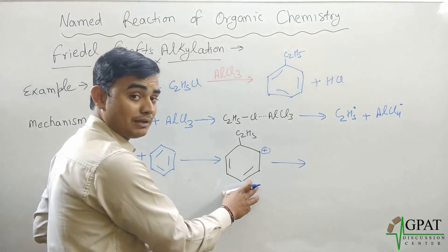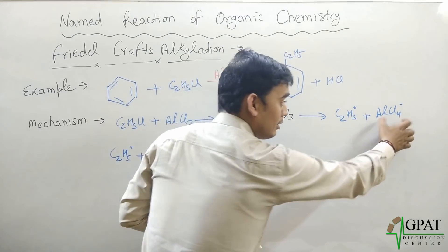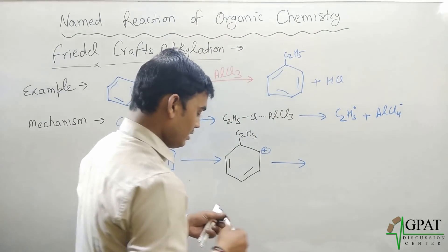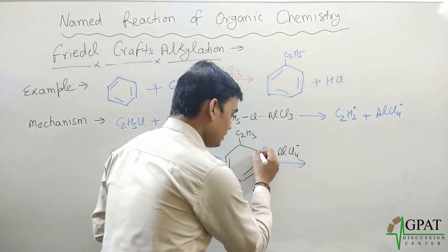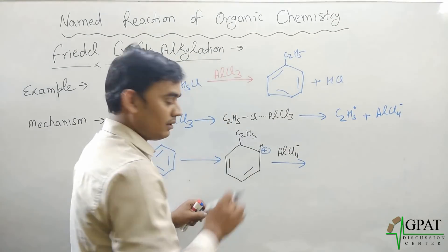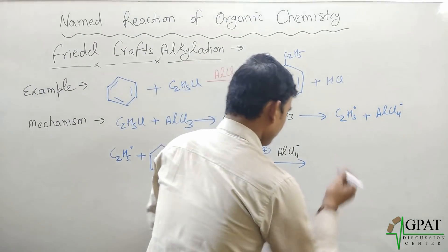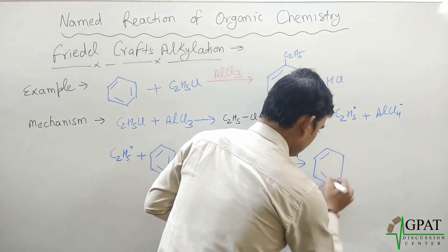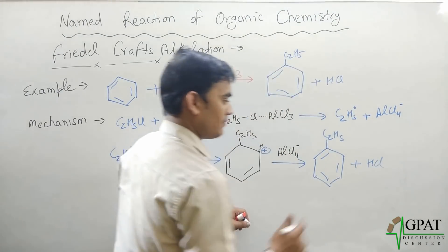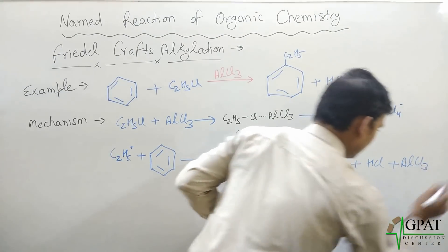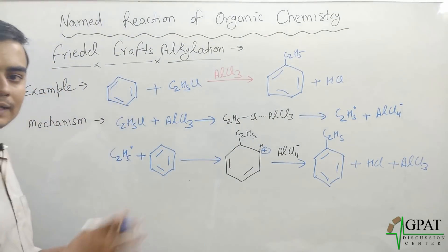The positive charge from the ethyl carbocation is transferred to the benzene ring as the pi bond breaks, making the intermediate non-aromatic and unstable. To restore stability and aromaticity, AlCl₄⁻ reacts and the hydrogen ion leaves, taking its electrons. The byproduct hydrochloric acid is formed, Lewis acid AlCl₃ is regenerated, and the final product is ethylbenzene. This is Friedel-Crafts alkylation.